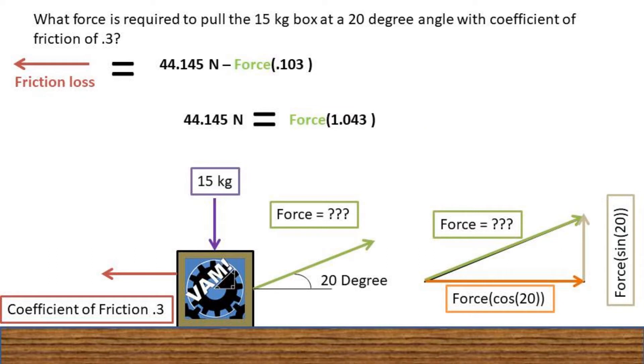Now we can combine the force quantities. We are left with 44.14 newtons being equal to 1.043 times the force on the rope.